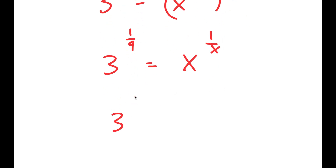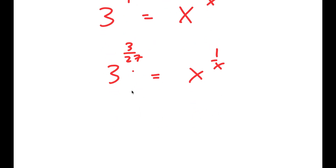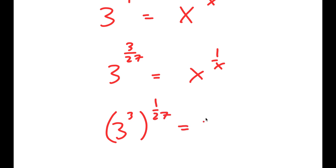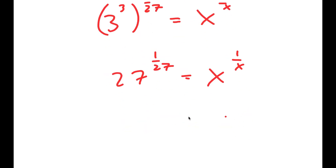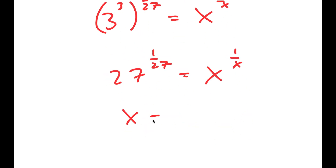Now, 1 over 9 is the same thing as 3 over 27. And I can rewrite this as 3 to the power of 3 to the power of 1 over 27 is equal to x to the power of 1 over x. So now I get 27 to the power of 1 over 27 is equal to x to the power of 1 over x, meaning x is equal to 27.